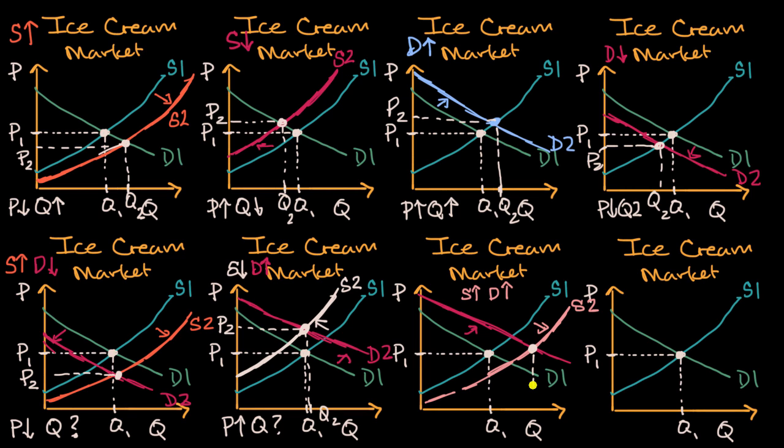So it's clear, it's unambiguous that our new equilibrium quantity, Q2, has gone up. Q, quantity has gone up.